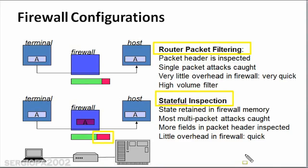Stateful inspection firewalls retain the state of the connection between terminal and host in their memory, and this gives the firewall more fields to analyze. States like 'I'm connected' or 'I'm not connected' — the kind of messages that happen in communications between computers — are retained in that firewall's memory. That allows the firewall to implement security filters based on that information, making it more secure than simply packet filtering.